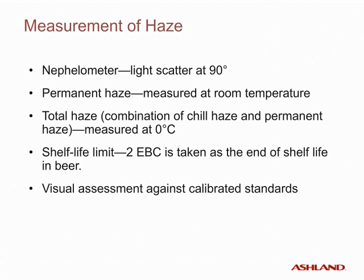To measure haze in a sample of beer, we use a nephelometric turbidity meter with a light scattering angle of 90 degrees. We measure beer haze at room temperature, which gives us the permanent haze, and measure total haze after cooling to 0 degrees Celsius for 24 hours, which gives us the sum of both permanent haze and chill haze. The chill haze is reversible, so the total haze measurement captures both. The end of useful shelf life is typically taken as a haze value equal to or less than 2 EBC. If haze meters are not available, visual assessment against calibrated standards is possible, but this becomes subjective.